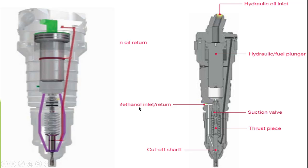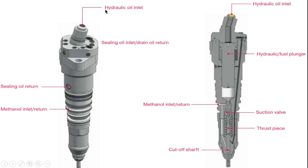In normal operation when the injector is not injecting, oil comes in and accumulates at the top. When the plunger is activated and moving down from the hydraulic oil side, the oil coming up lifts the plunger and injection takes place.